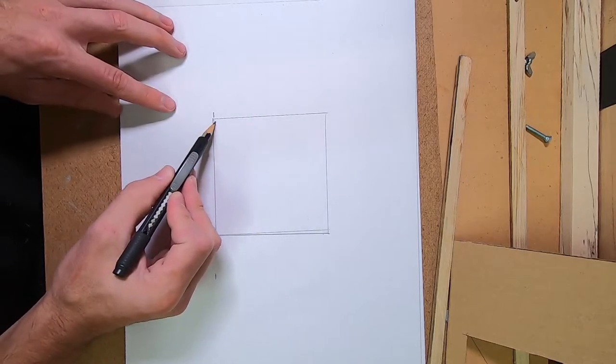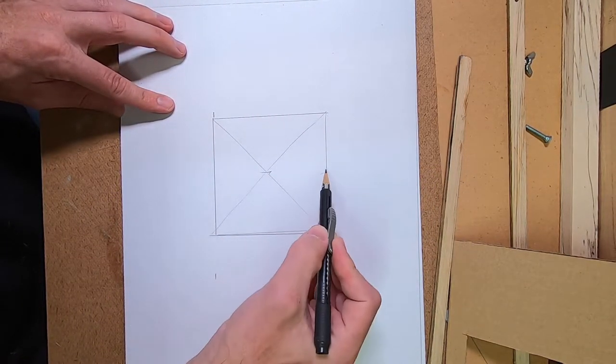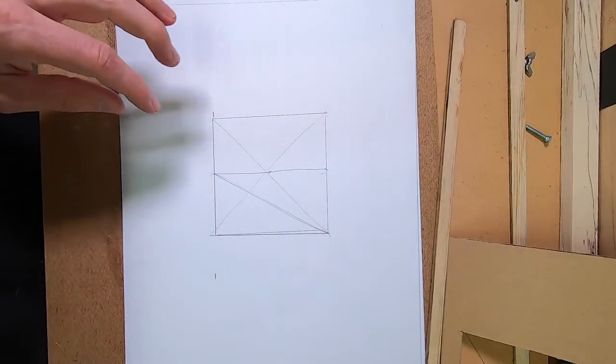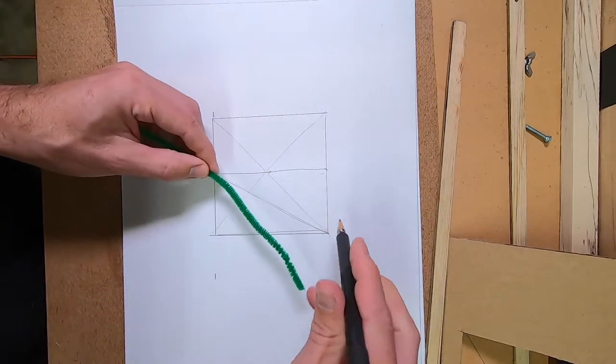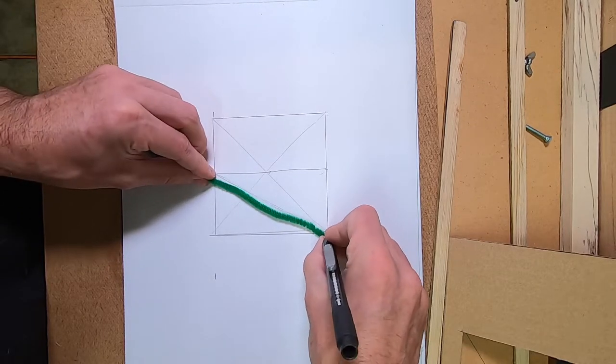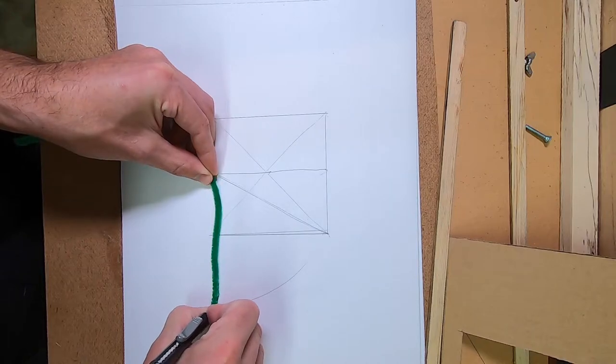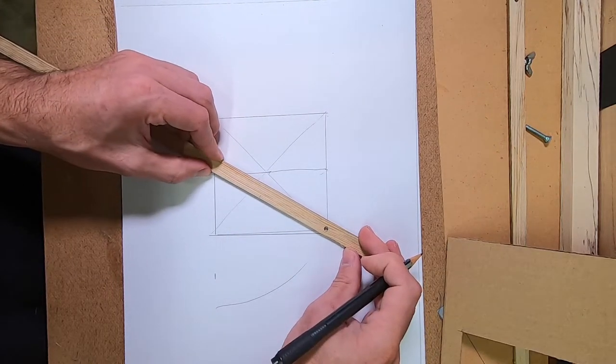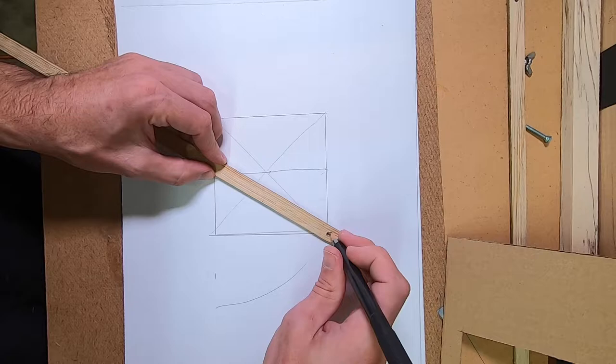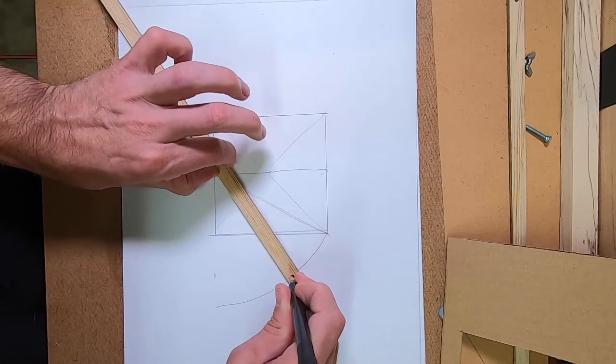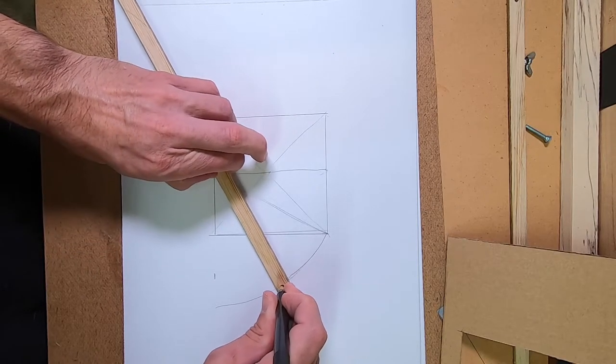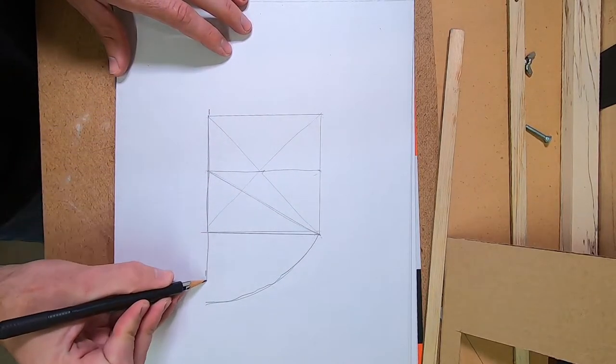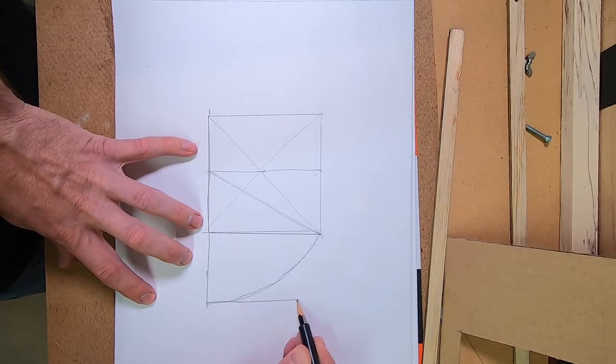If we go back to our square, and then find our center again, and then swing the angle down. And this gives us a phi rectangle.